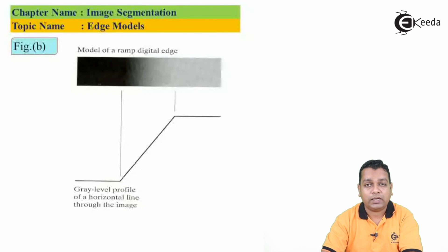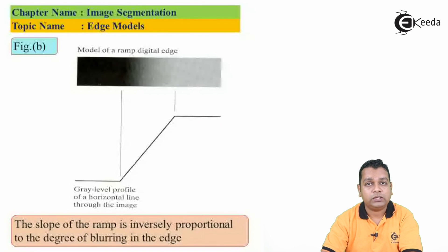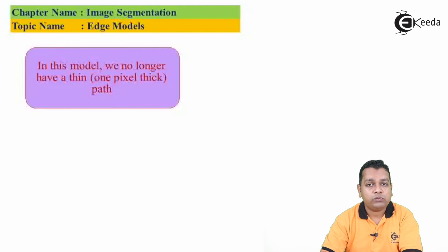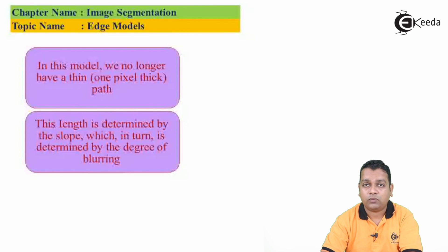Figure B shows the gray level profile of a horizontal line through the image with a ramp between the two levels. On the extreme left we have complete darkness; on the extreme right we have uniformity in gray level with a gradual transition represented by the ramp-like structure. The slope of this ramp is inversely proportional to the degree of blurring in the edge. The thickness is determined by the slope, which in turn is determined by the degree of blurring.